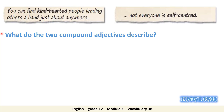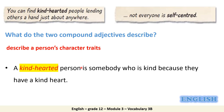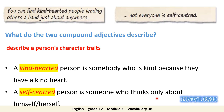As I have mentioned before, adjectives are used to describe nouns or pronouns. What do these adjectives describe? These adjectives describe a person's character traits. A kind-hearted person is kind because they have a kind heart. What does the compound adjective self-centered mean? It means a person who thinks only about himself or herself.